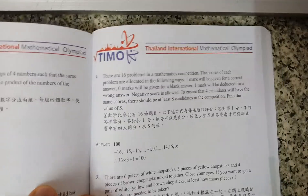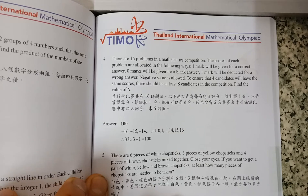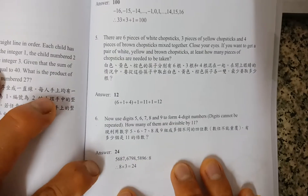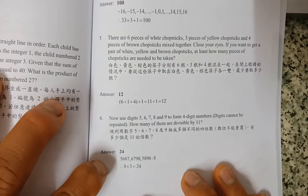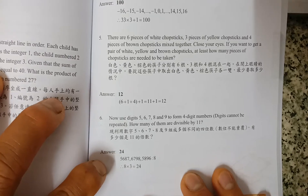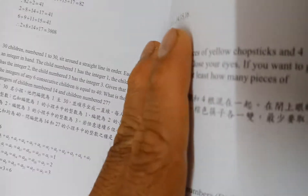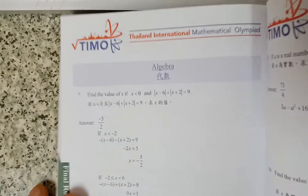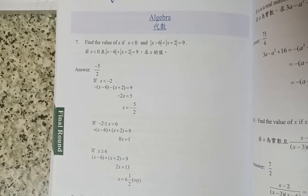And then problem number four. And then problem number five and problem number six, with their solutions and answers. Those are the six problems for the first part, which is the logical thinking part.